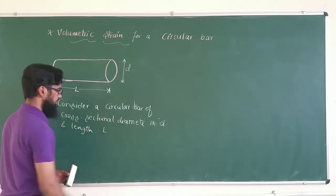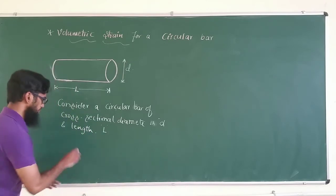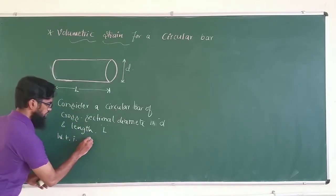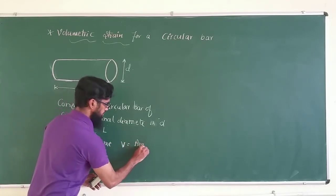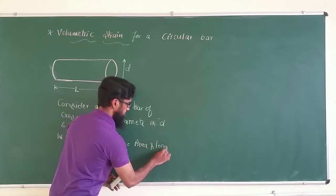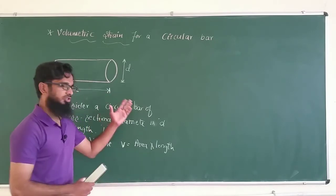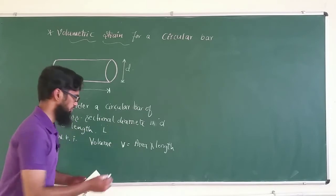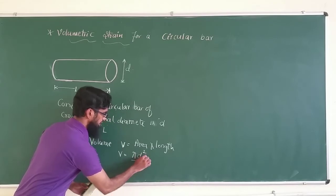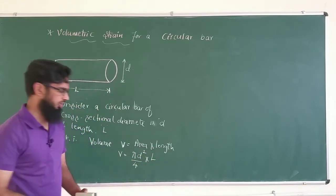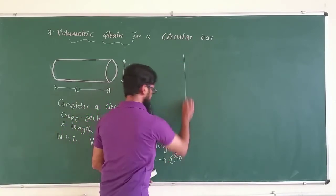For this circular bar, we know that Volume V is equal to Area × Length. The cross-sectional area is π d²/4, so the volume becomes V = (π d²/4) × l. Let us call this Equation 1.